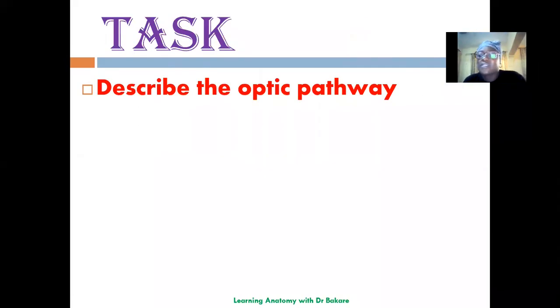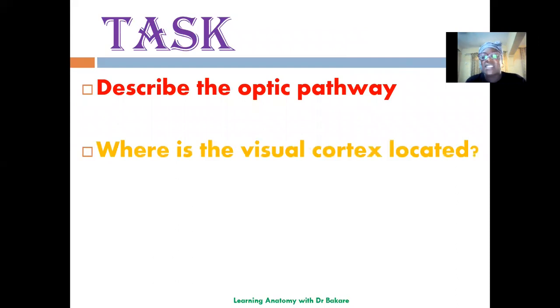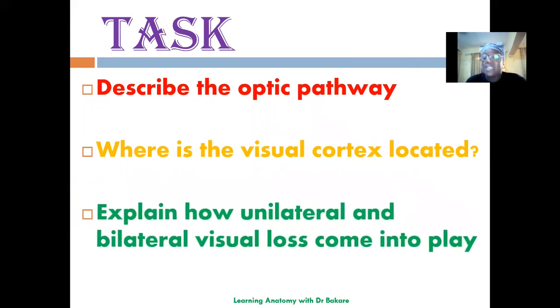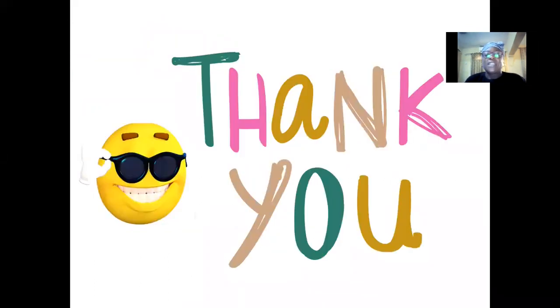As a task, the first question asks us to describe the optic pathway — this should come easy after going through this lecture. The second question is: where is the visual cortex located? The third question is to explain how unilateral and bilateral visual field loss come into play. Thank you for watching, and let's continue to upgrade our knowledge in anatomy through this channel.